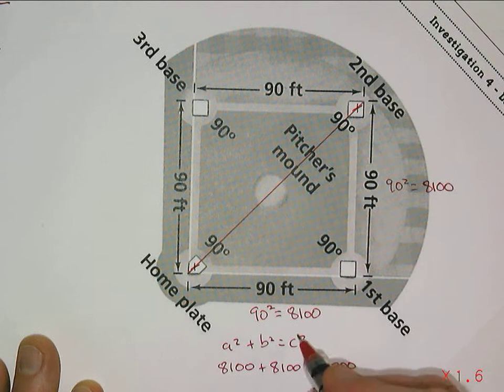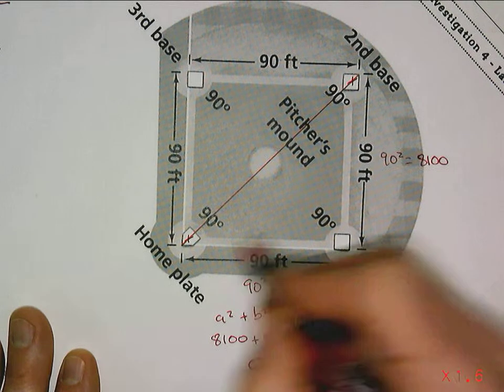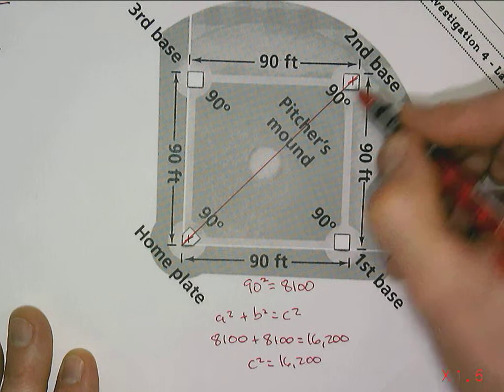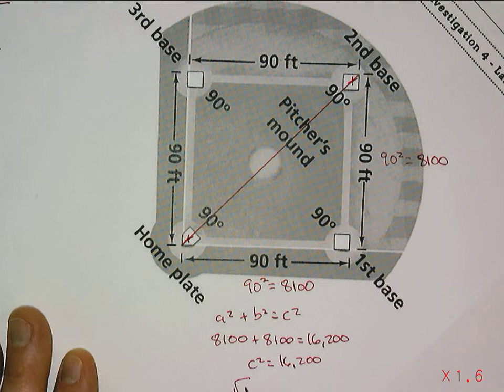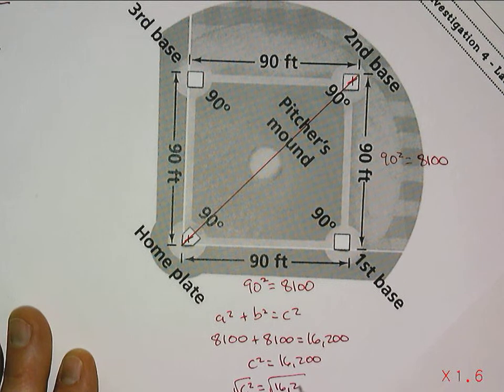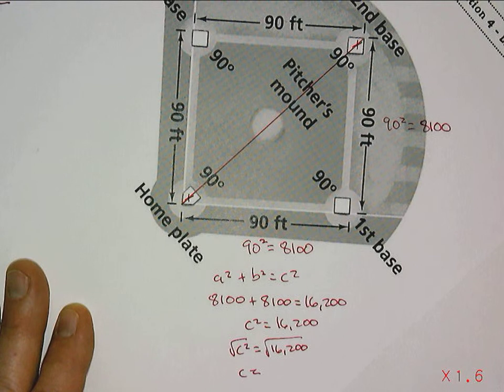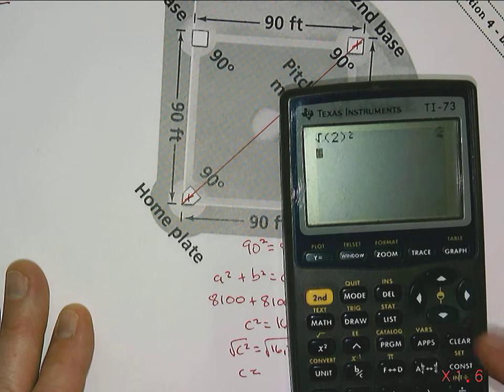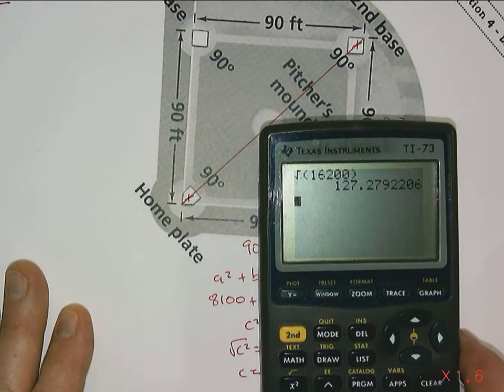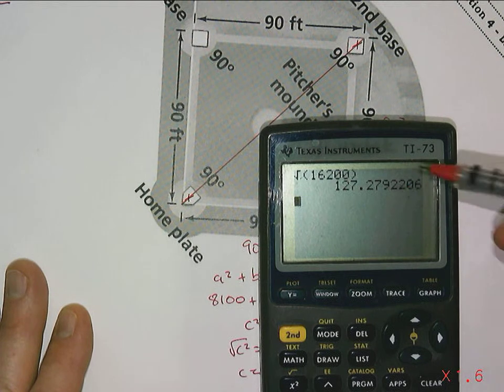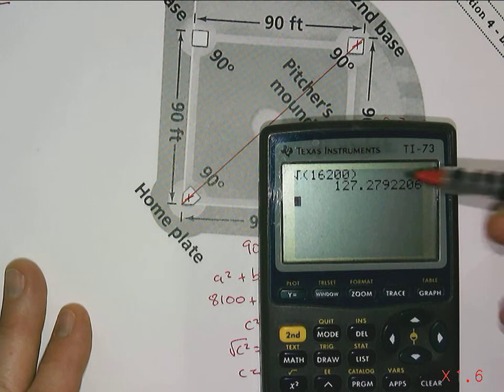To find this length across from home plate to second base, we need to take the square root of c squared and the square root of 16,200. If we take the square root of 16,200, we get 127.3, we'll round that off as an approximation because we have an irrational number here in our answer.